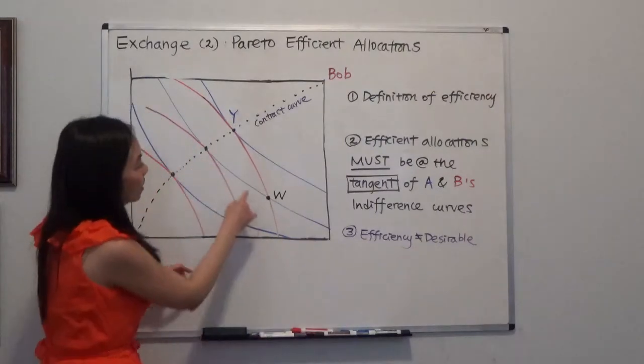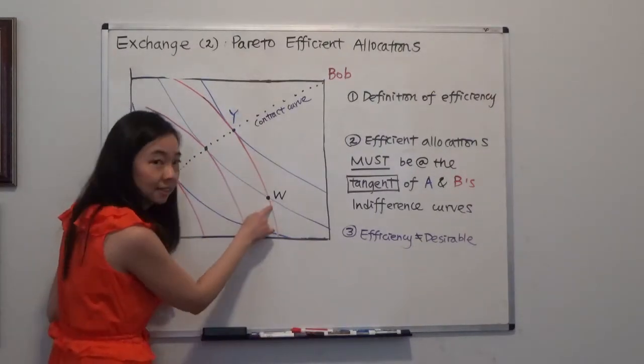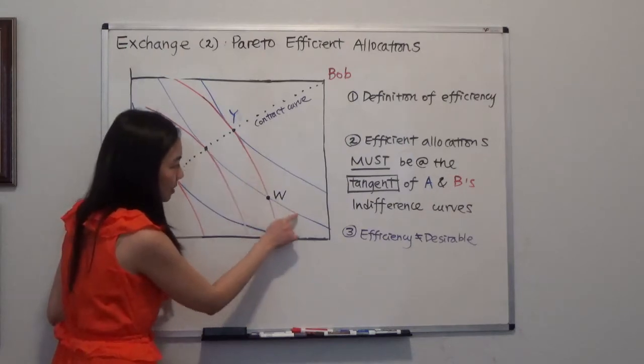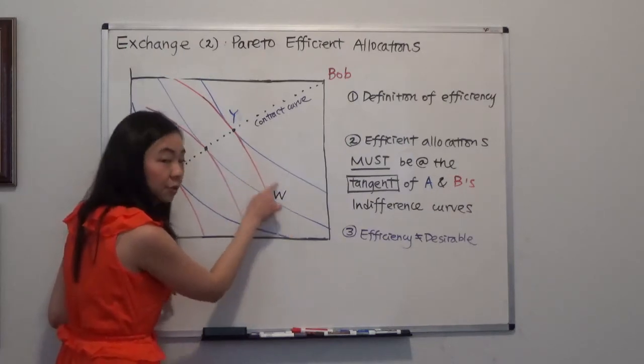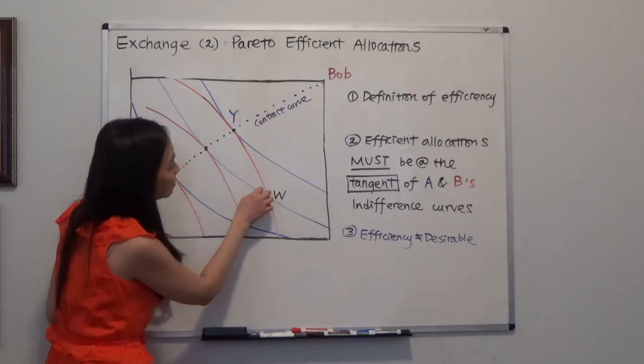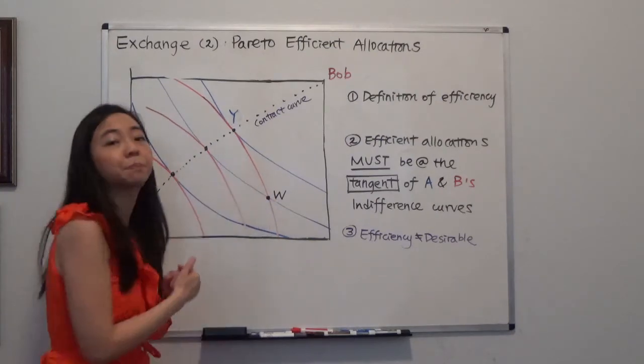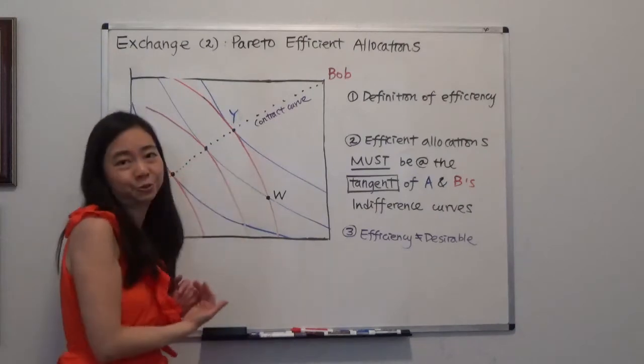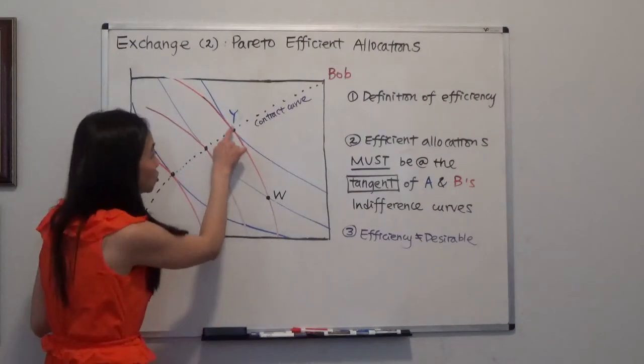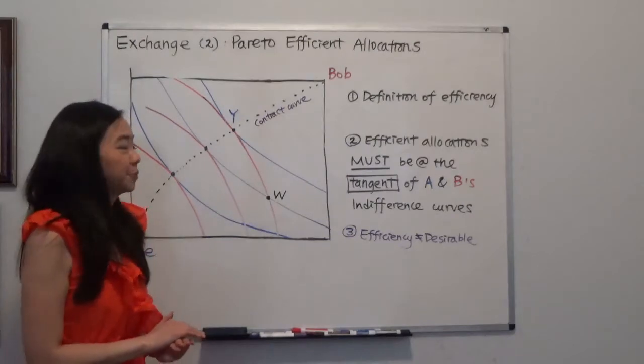So why is that? Notice that when the indifference curves are intersecting with each other, then we can always improve, move a little bit to this direction. And for both Alice and Bob, our utility can be improved. But once you're tangent to each other, you know that you can no longer improve.